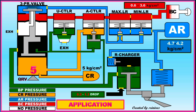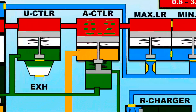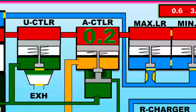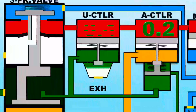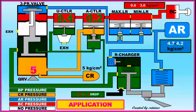When 0.2 BC pressure is reached, the connection between BP and CR will be disconnected through the A controller, because when BC application starts, CR pressure should remain constant at 5 kg per cm². When 0.4 BC pressure is reached, the U controller exhaust is closed, because the U controller reduces BP pressure further by 0.4 in addition to the brake pipe pressure reduced by the driver from the loco, to accelerate the brake application during minimum reduction throughout the entire formation.